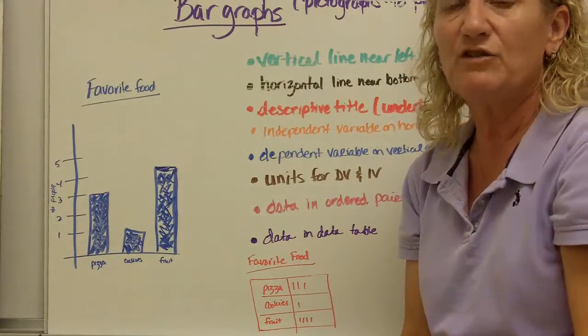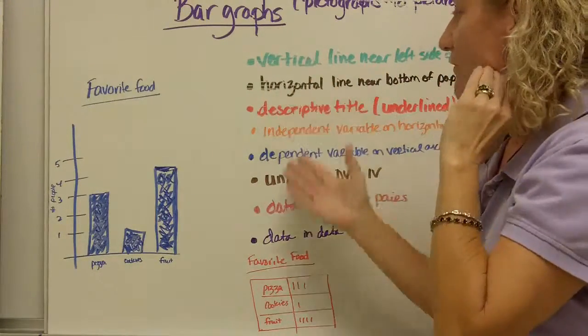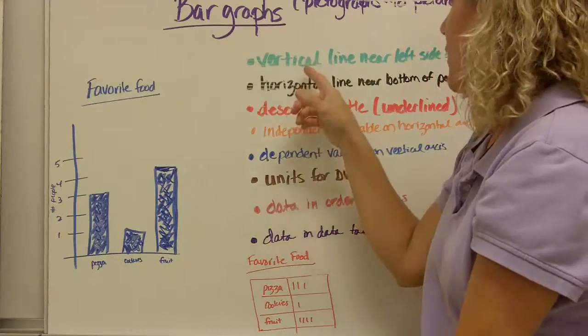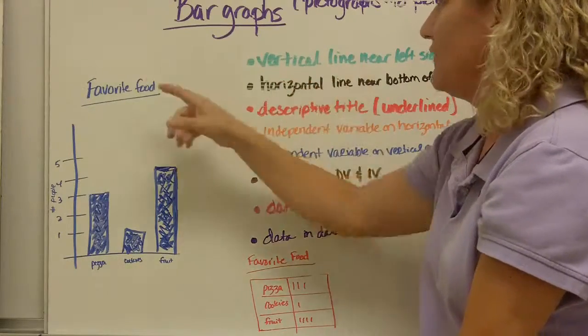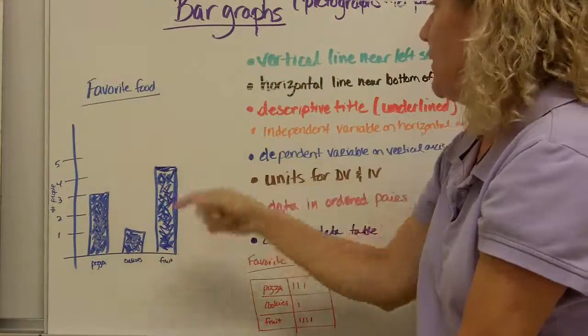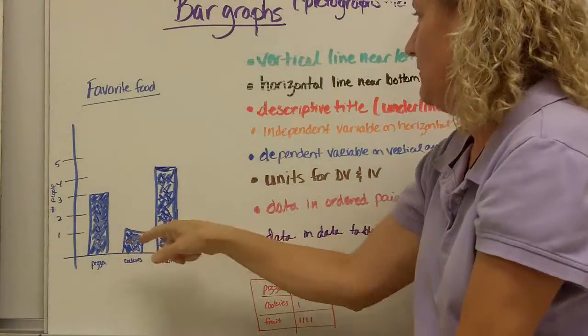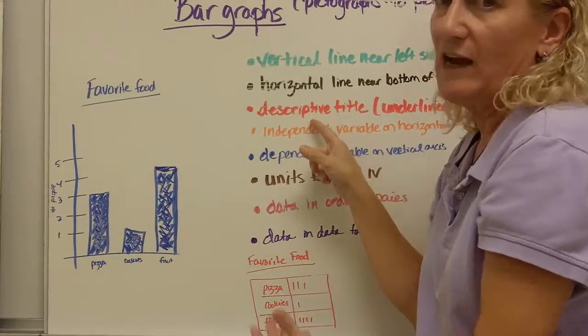Next, we have bar graphs. Bar graphs are simply pictograms without the pictures. They have a variety of components as well. The vertical line near the left side of your paper. That's this one. Horizontal line near the bottom of your paper. That's this one.